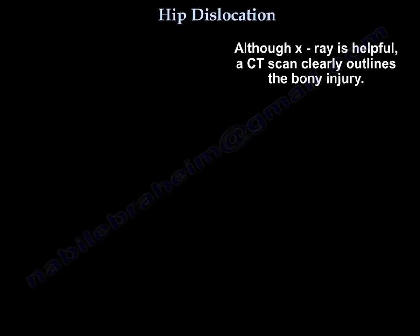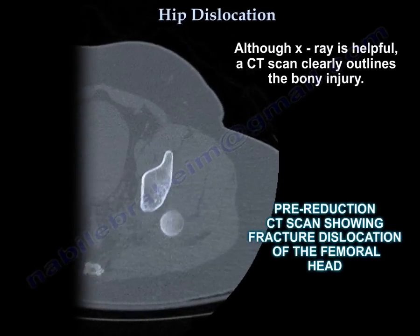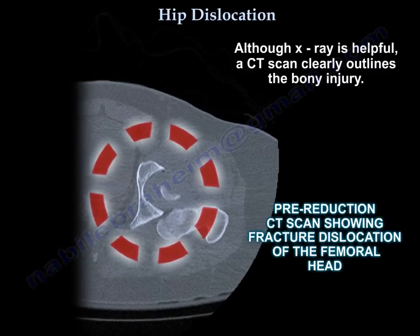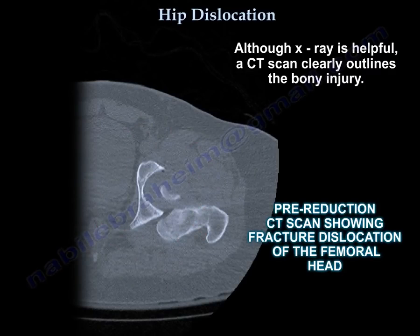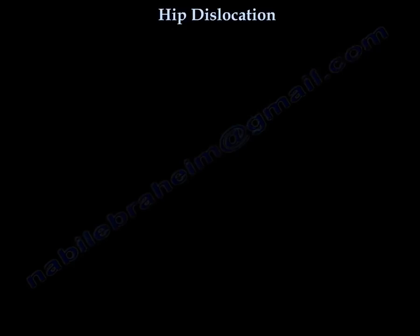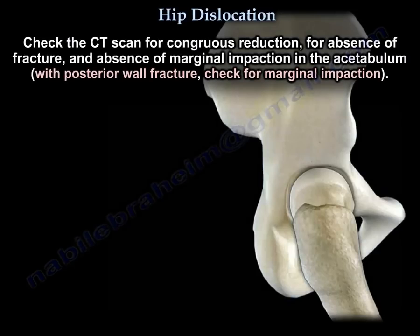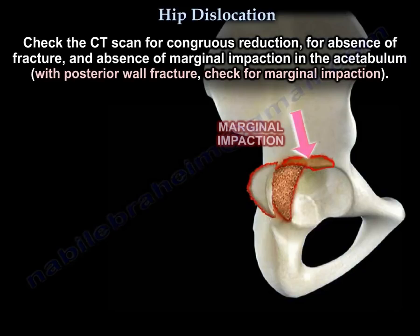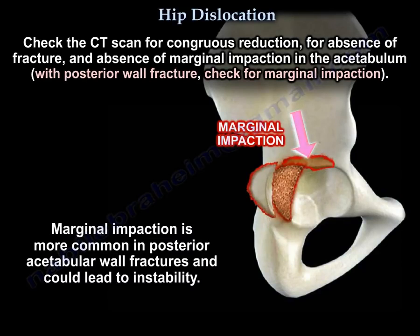Although the X-ray is helpful, the CT scan clearly outlines the bony injury. Here is a pre-reduction CT scan showing a fracture dislocation of the femoral head. Check the CT scan for congruent reduction, for absence of fracture, and for absence of marginal impaction in the acetabulum.